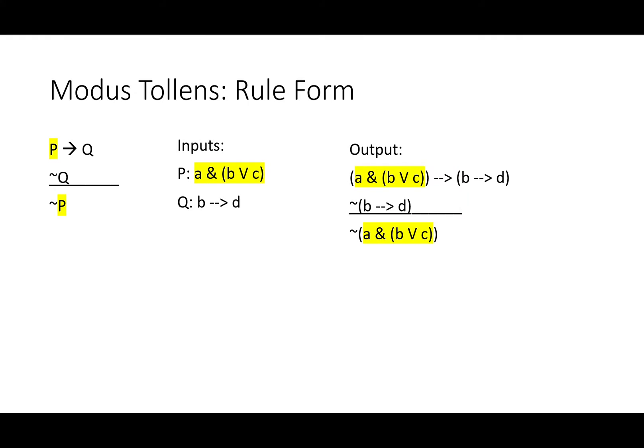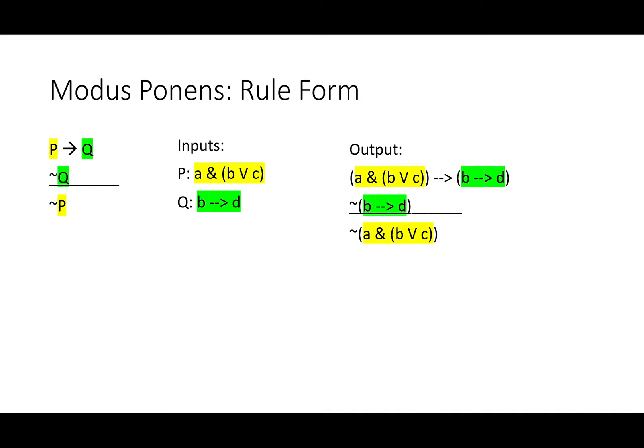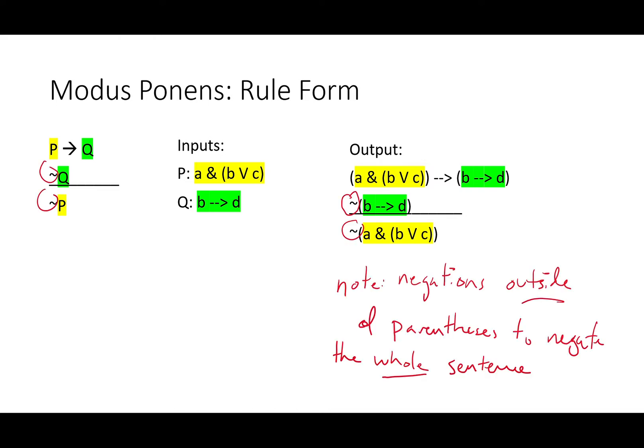Notice that 'A and either B or C' is still the antecedent of the conditional, but this time the negation of P is our conclusion. 'If B then D' substitutes in for Q, but this time 'if B then D' is negated in the second premise. Note that these negations are outside of parentheses — the whole sentence is negated. We're not dealing with just 'not A' or 'not B'; we're dealing with entire negated sentences.